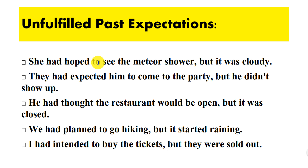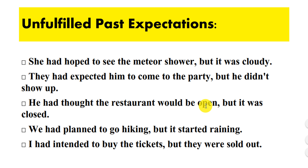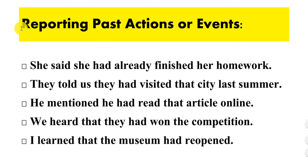The past perfect tense is used to express unfulfilled past expectations. For example: she had hoped to see the meteor shower but it was cloudy; they had expected him to come to the party but he didn't show up; he had thought the restaurant would be open but it was closed.